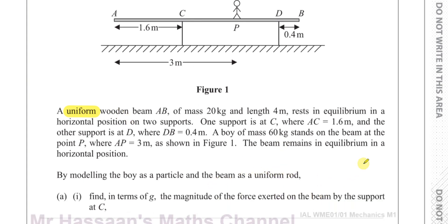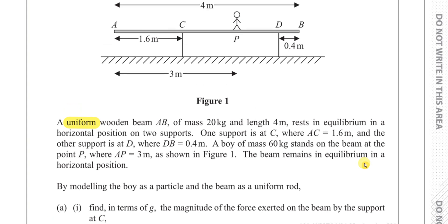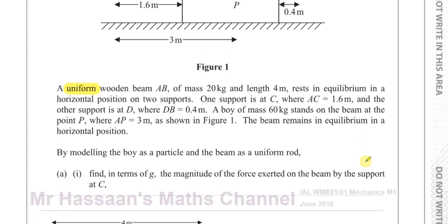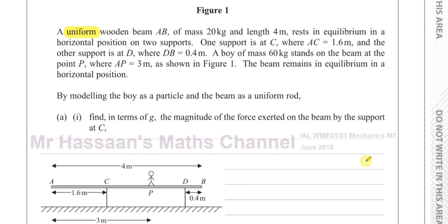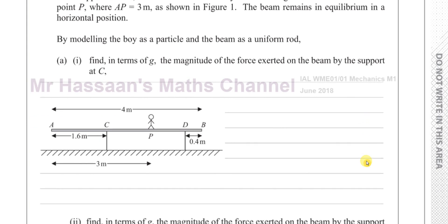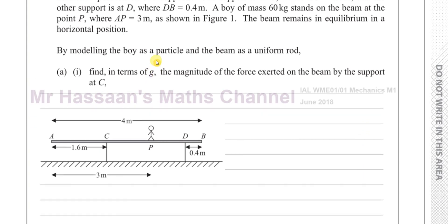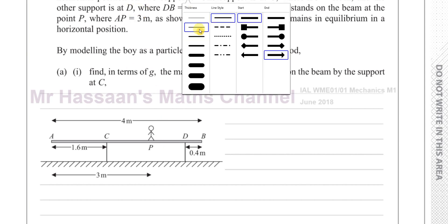We need to find, in terms of g, the magnitude of the force exerted on the beam by the support at C. So we need to find the reaction force at C. Let me put down all the forces acting in this situation.